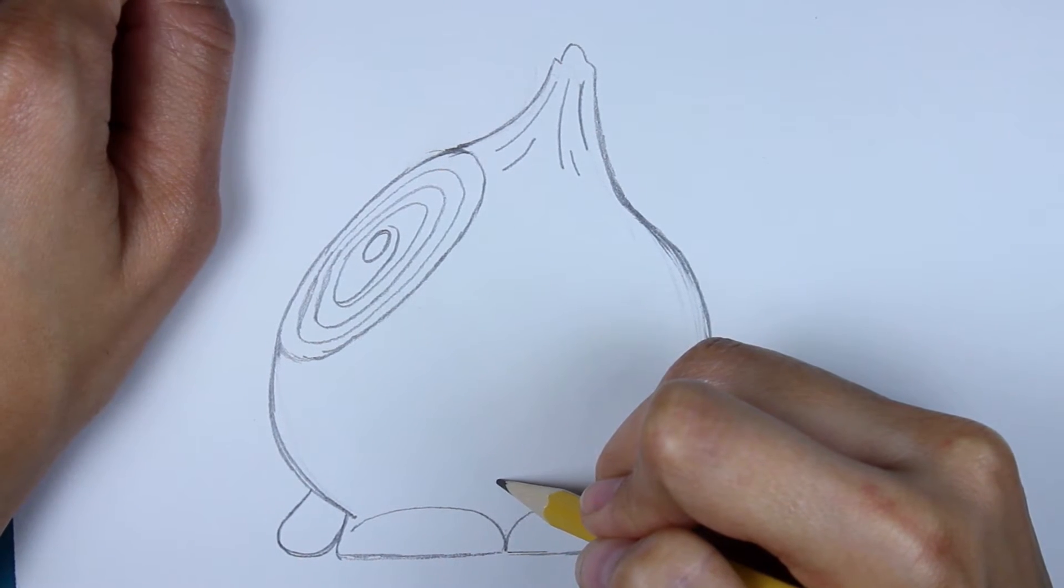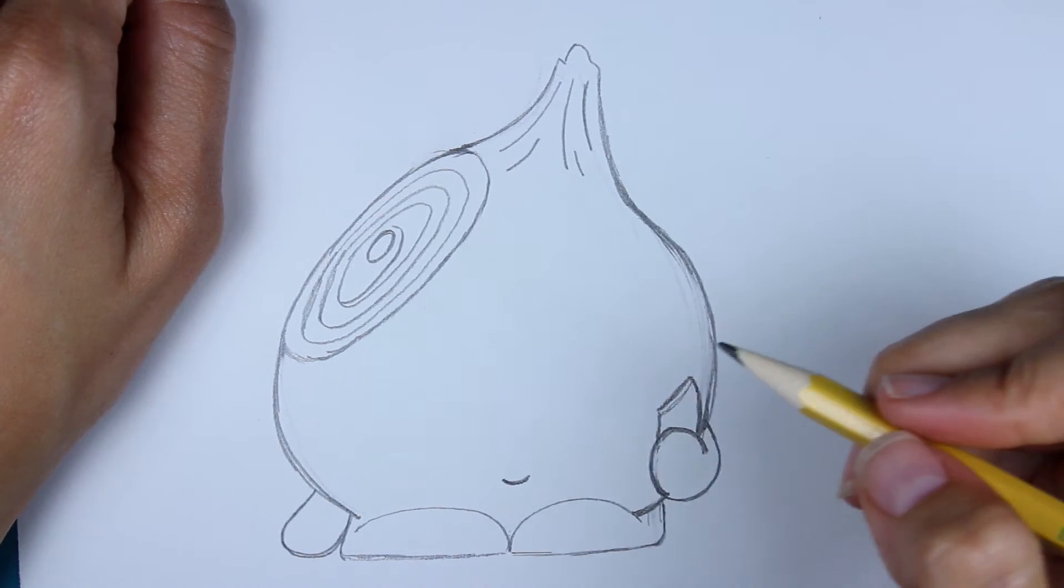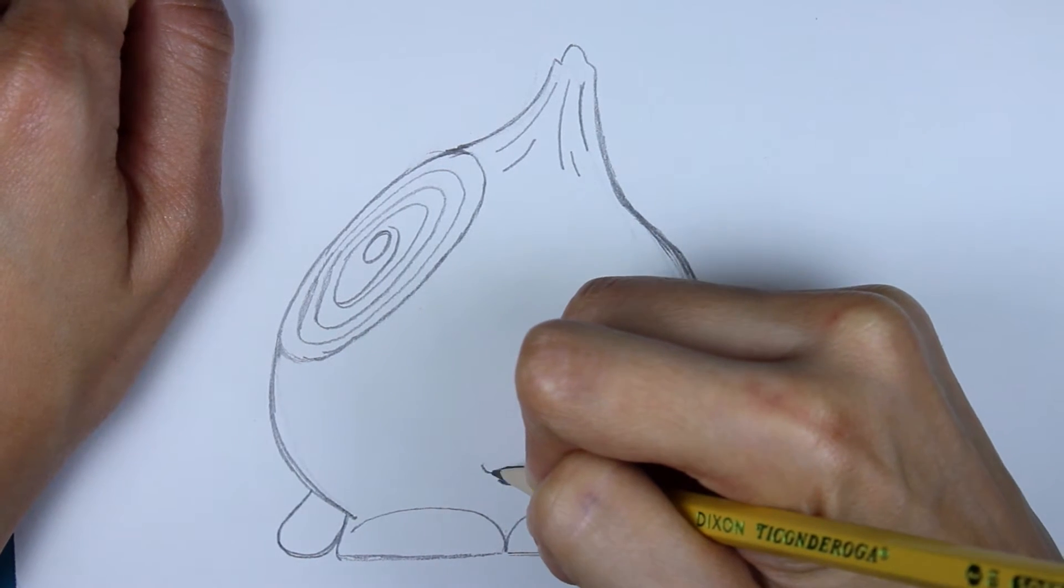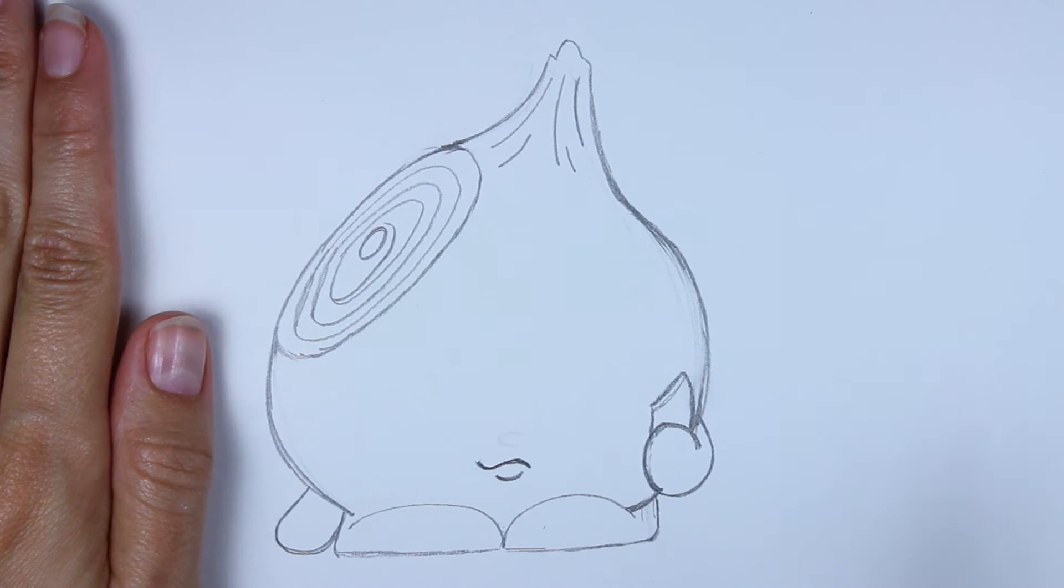About here. And we're going to make a little curved line like this. And then leaving a little bit of space, we're going to make like a worm looking shape here. Or curved little line here. So that's the mouth.